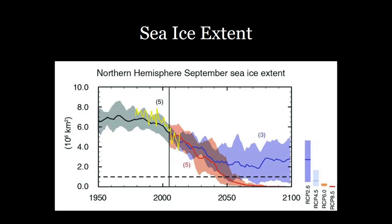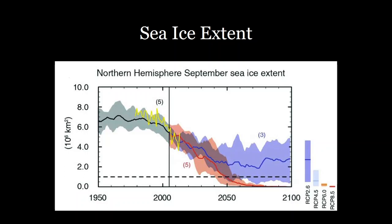That will have very dramatic effects not only for the climate, but for ecosystems in the Arctic and the people living there. The only way to save that sea ice is to put in measures to significantly decrease our emissions, because sea ice concentrations are only going to go down.